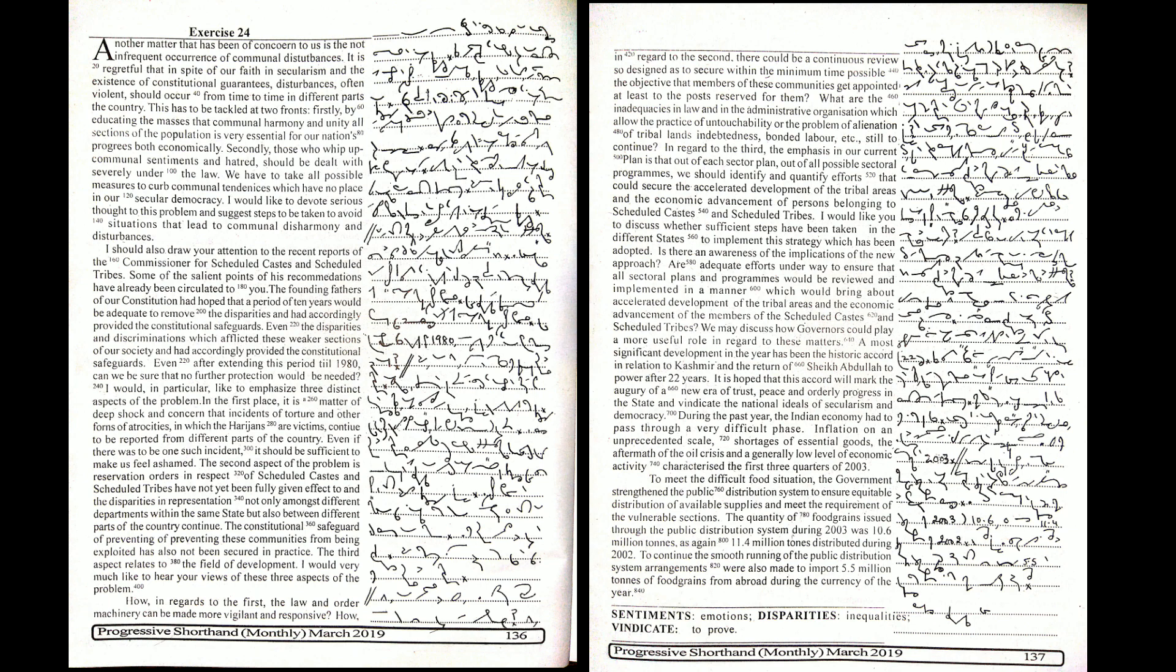the government strengthened the public distribution system to ensure equitable distribution of available supplies and meet the requirement of the vulnerable sections. The quantity of food grains issued through the public distribution system during 1973 was 10.6 million tons as against 11.4 million tons distributed during 1972. To continue the smooth running of the public distribution system, arrangements were also made to import 5.5 million tons of food grains from abroad during the currency of the year.